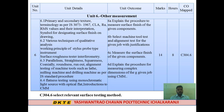Topic 6.3 covers the working principle of the stylus-type instrument — a highly sensitive instrument for checking surface finish accurately. The next topic covers geometric parameters including Parallelism, Straightness, Squareness, Coaxiality, Roundness, Runout, and Alignment Testing of machine tools such as lathe, milling, and drilling machines.